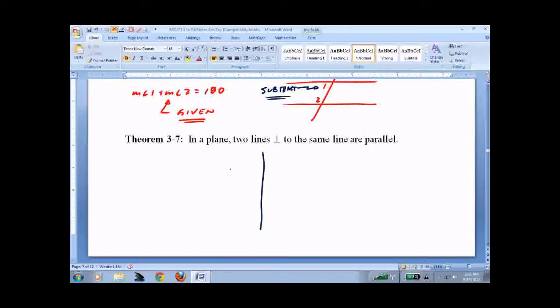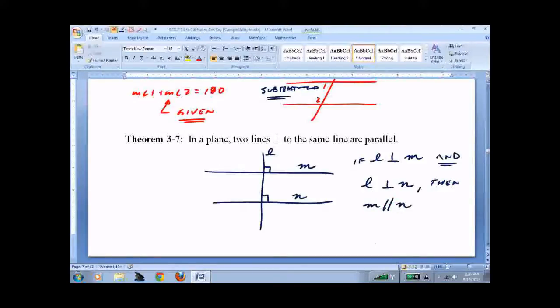Two lines perpendicular to the same line are parallel. Perpendicular. Perpendicular. L. M. Oof, that was bad. M. N. If L is perpendicular to M and N is perpendicular to, I'll keep it in the same order. L is perpendicular to N, then M is parallel to N. Good proof to try.